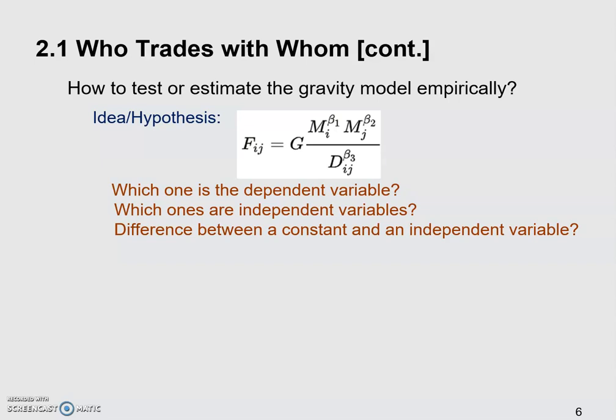One more thing we need to clarify here is the difference between a constant and an independent variable. Now, some of you probably already noticed that in the model, we actually still have several other guys we did not discuss. So here, these guys are G, we said it's a gravitational constant in Newton's law. But here, it's just the constant for this trading relationship. And we have beta 1, beta 2, beta 3. So all four of them are what we call constants. Now, what's the difference between a constant and an independent variable?